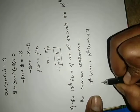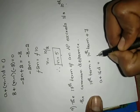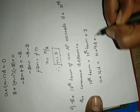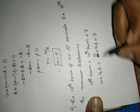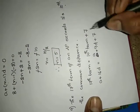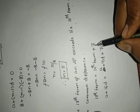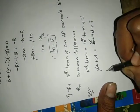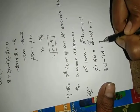Solve this. 17th term: A plus 17 minus 1 = 16D. So A plus 16D equals to A plus 10 minus 1 = 9D plus 7. A plus 16D equals A plus 9D plus 7. The A terms cancel. 16D minus 9D equals to 7.